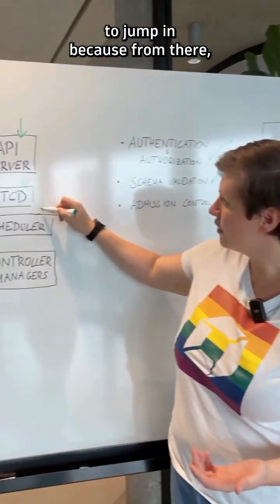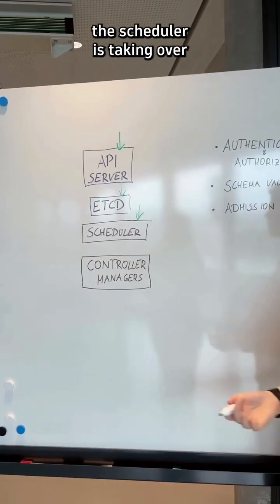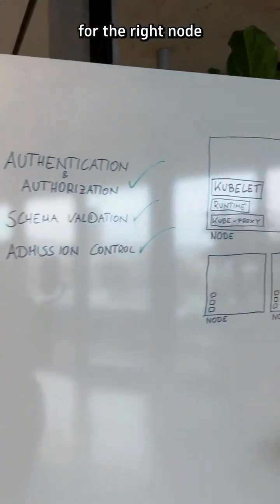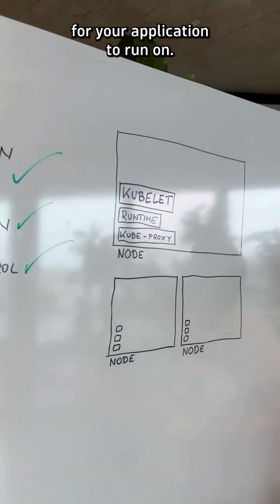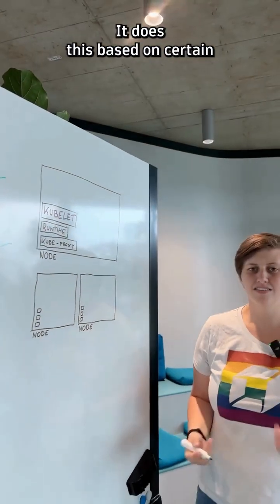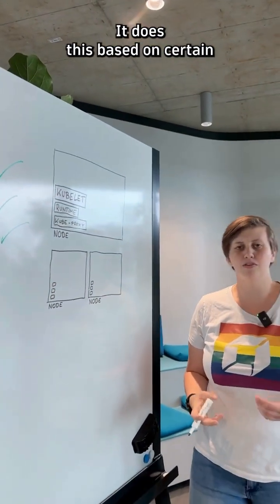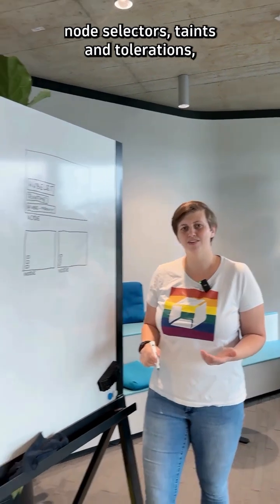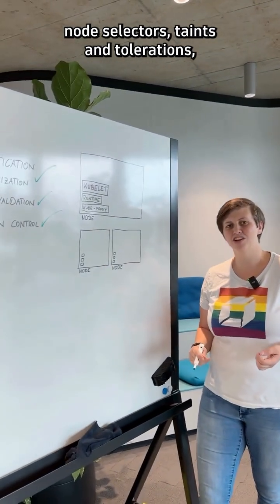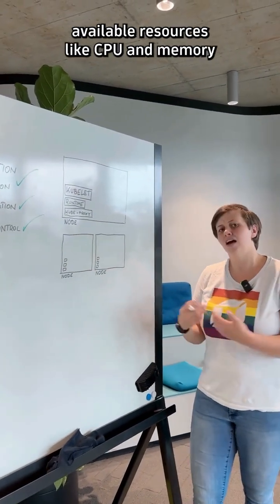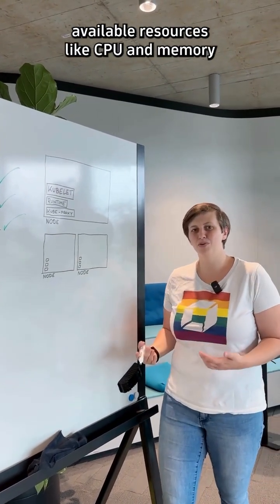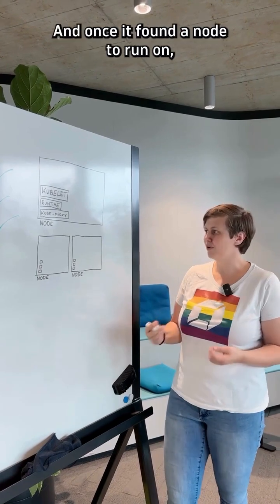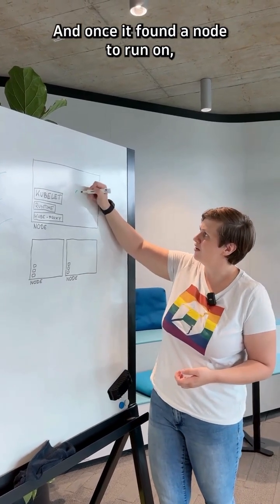From there, the scheduler takes over and looks for the right node for your application to run on. It does this based on certain scheduling requirements, like node selectors, taints and tolerations, available resources like CPU and memory, and so on.